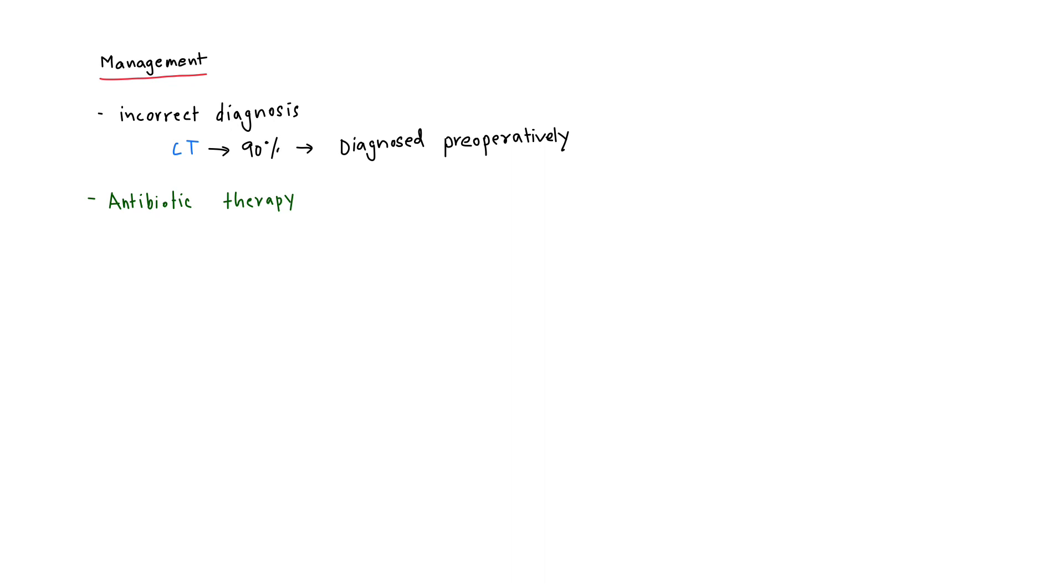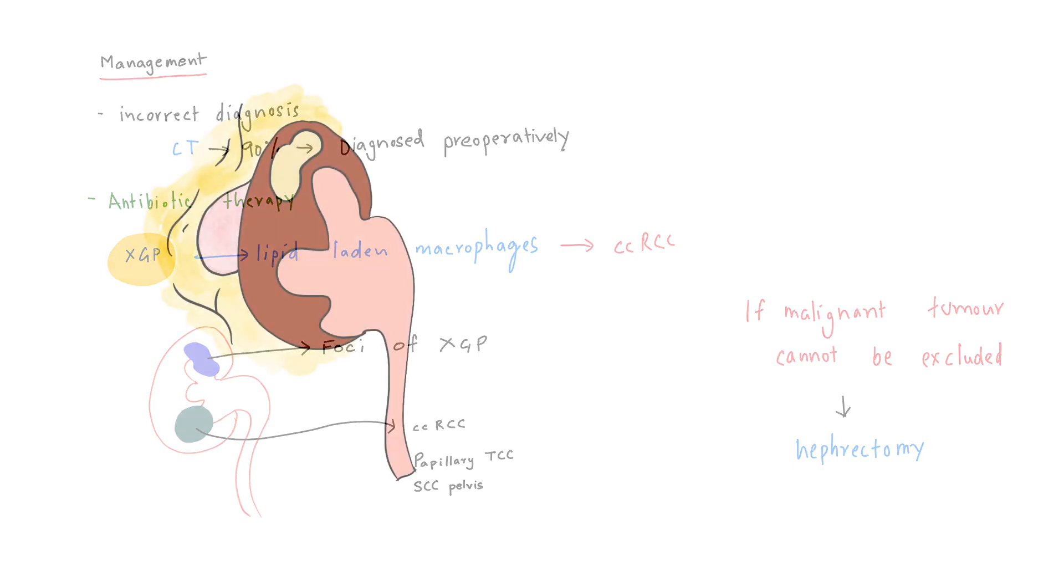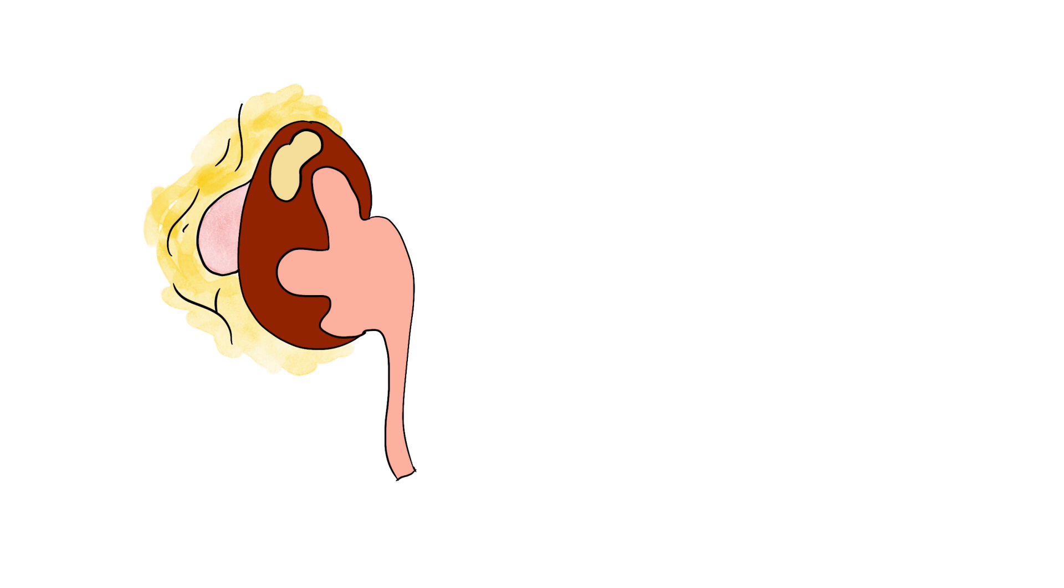We have studied previously that XGP on histopathology contains lipid-laden macrophages. This condition can therefore be difficult to distinguish from clear cell renal cell carcinoma. So preoperatively, if malignant tumor of kidney cannot be excluded, then patient must undergo nephrectomy. Another factor is that there are instances that patient may have a focus of XGP along with another focus of clear cell RCC, papillary, transitional cell carcinoma, and squamous cell carcinoma of renal pelvis. An important principle of treatment is that we must take out the entire mass because it is an infective mass, and if we leave anything behind it might lead to reinfection.